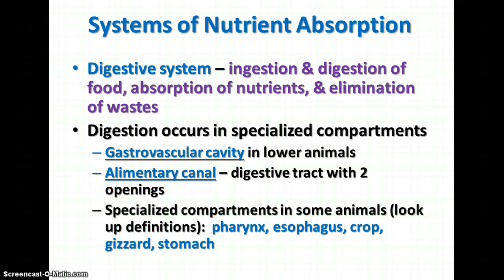In lower animals, we have the gastrovascular cavity that takes care of digestion and absorption of materials for the cells. Other animals have an alimentary canal — a digestive tract with two openings, like a complete digestive system. There are also specialized compartments in some animals: the pharynx, the esophagus, the crop, the gizzard, and the stomach.